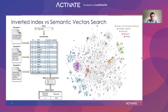Let me start by providing a high-level overview of what semantic vector search is and how it's different from classical keyword-matching search. Classical search engines utilize the inverted index to store term-document associations. It's very efficient at search time, but it's limited to keyword matching and cannot capture context.